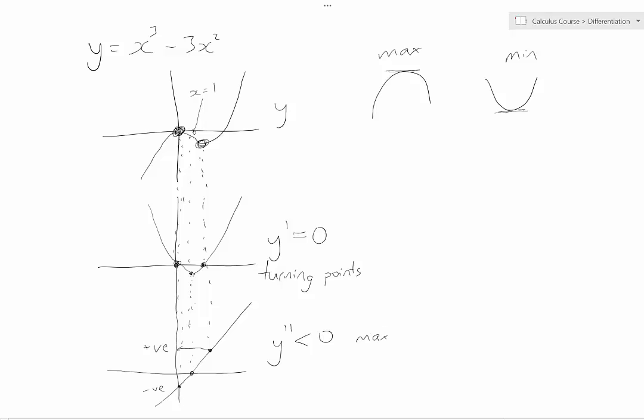Alternatively, you can see our minimum here, if we follow this all the way down to our second derivative, and come across, you can see it is a positive value in our second derivative. So if the second derivative is greater than zero, it means that the turning point must be a minimum.